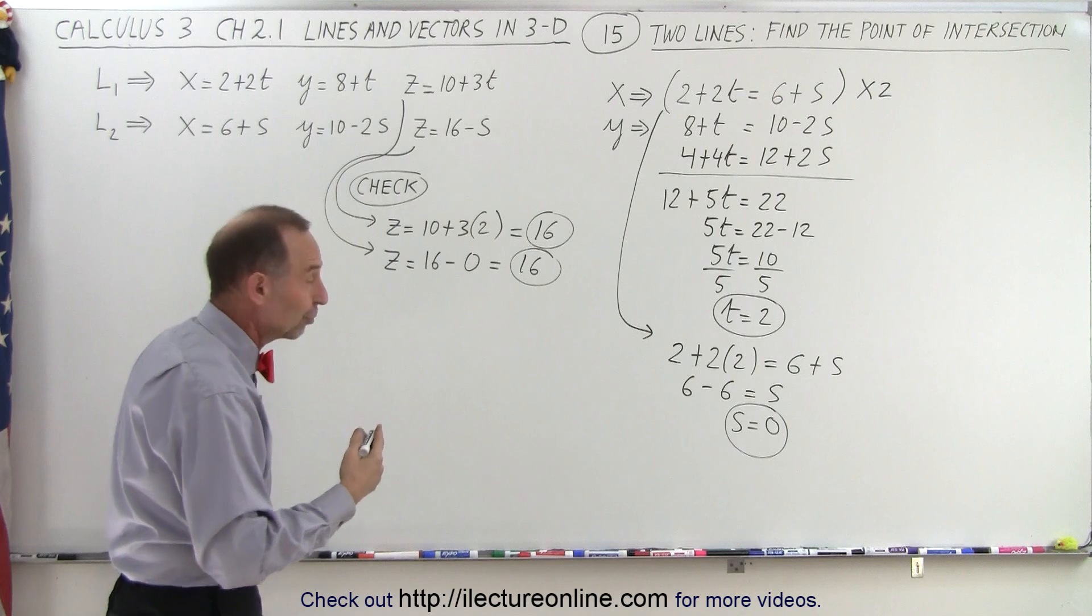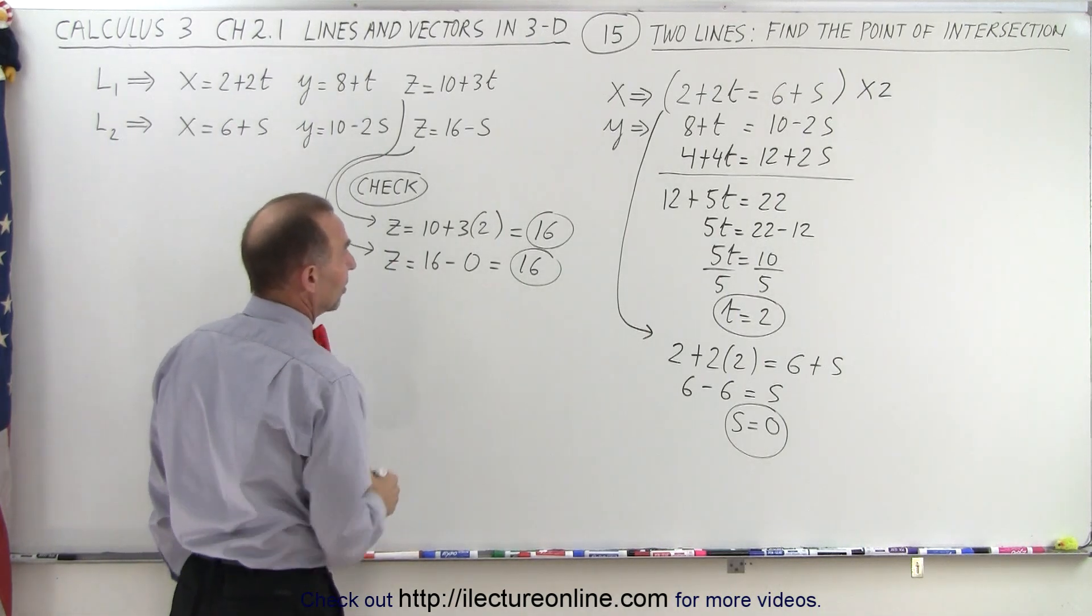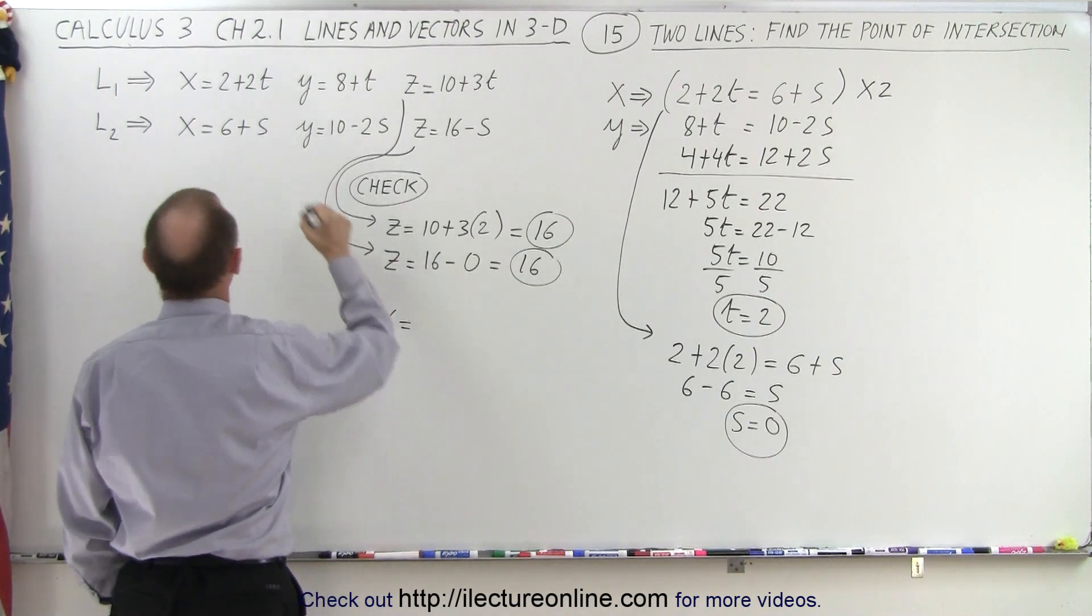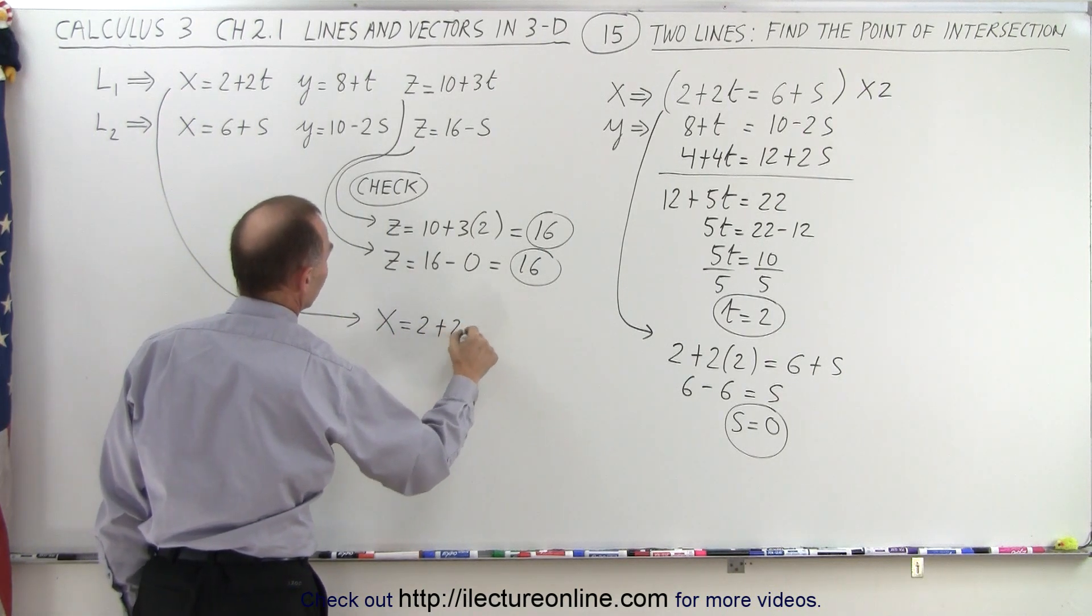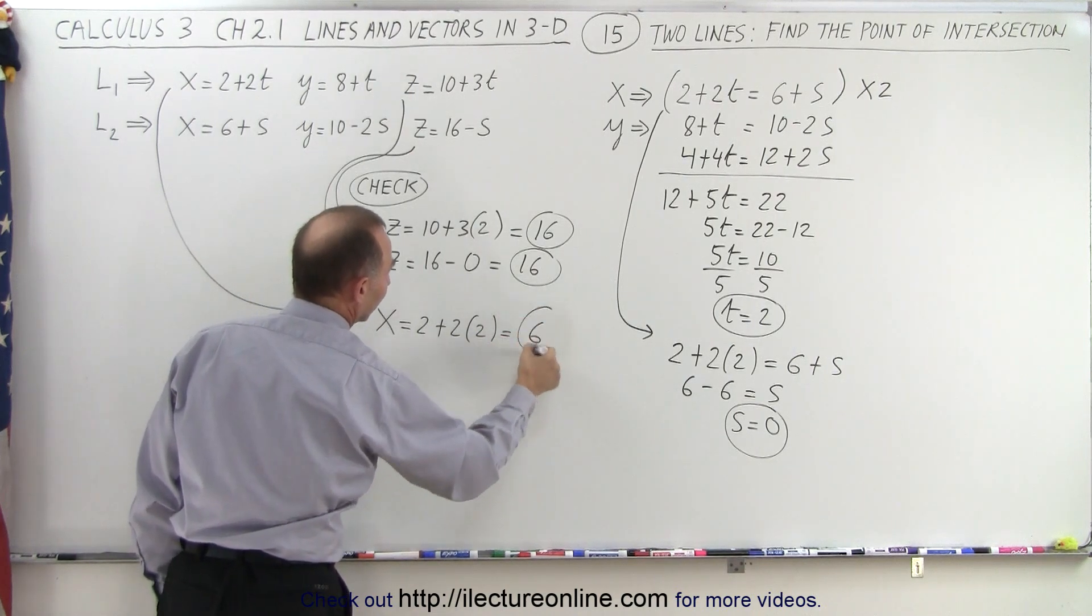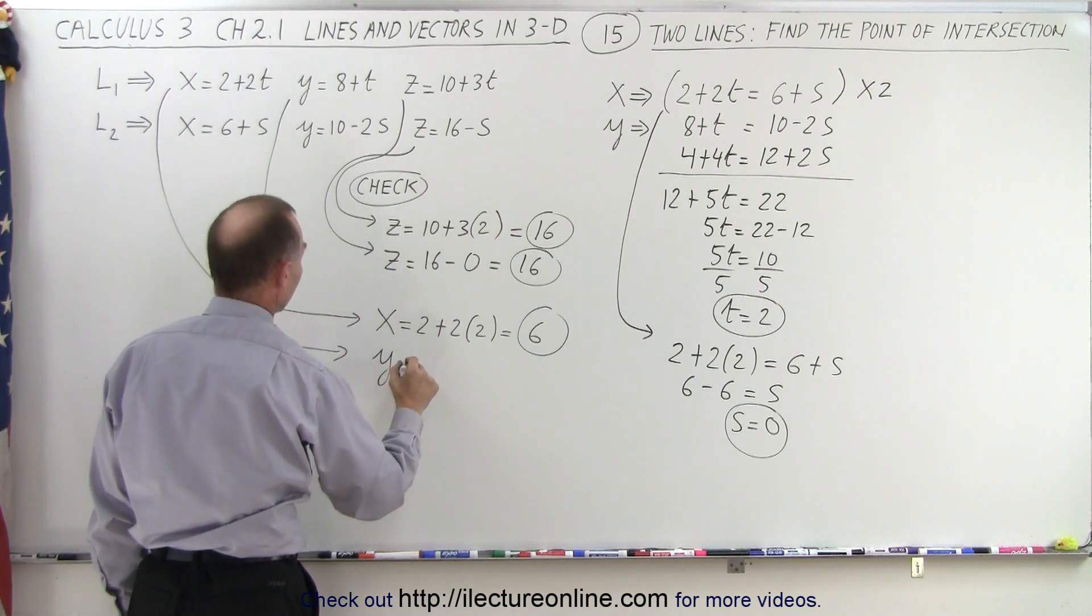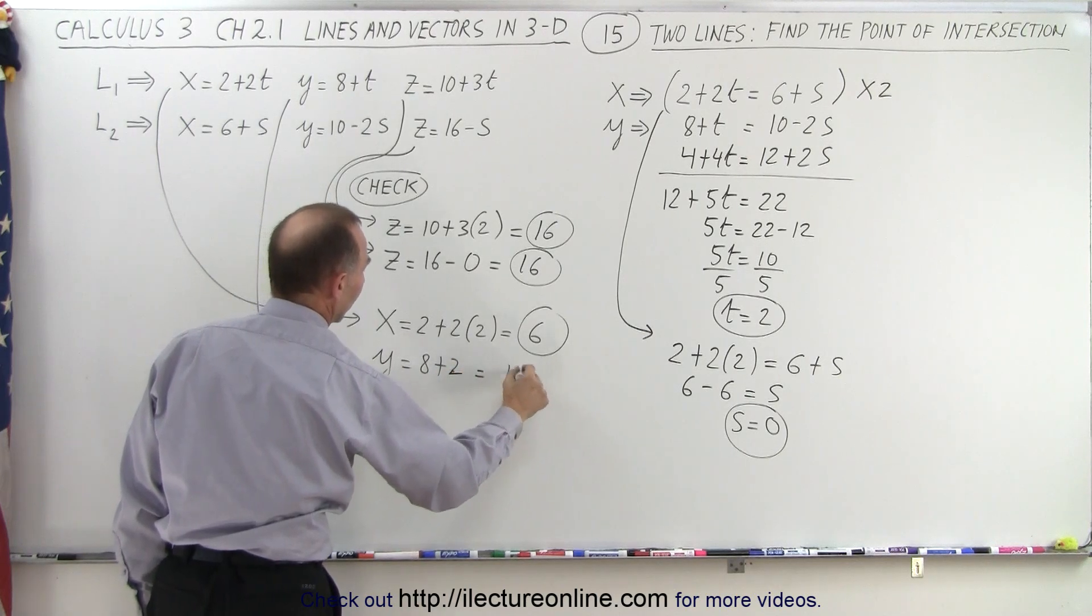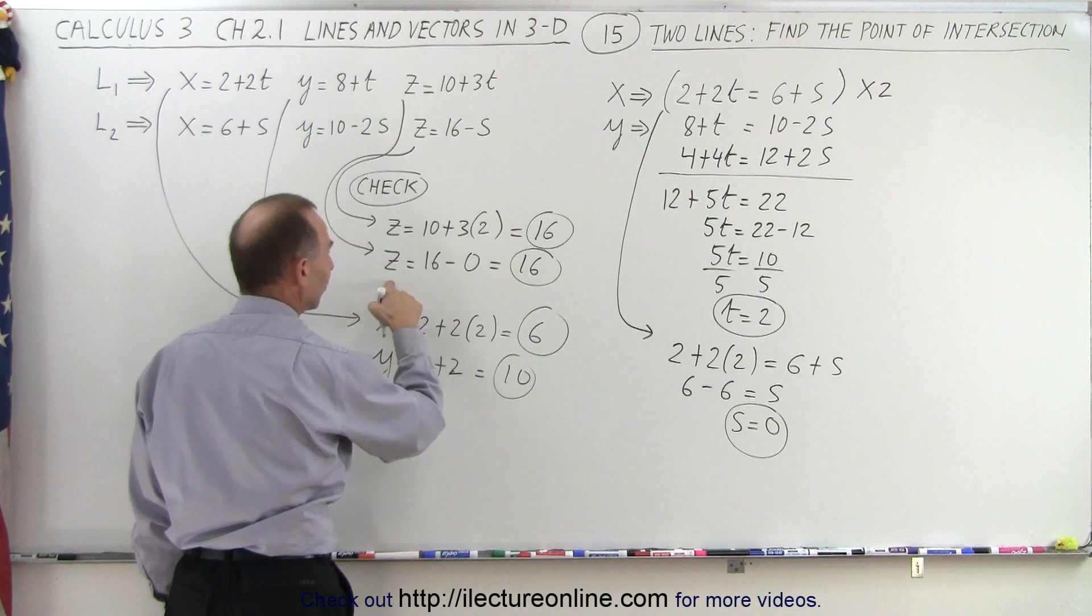Which means the lines do cross, and at that point, z will be equal to 16. And of course, we also need to find x and y. So x is equal to 2 plus 2 times t, which is 2, which is equal to 6, so the x value is equal to 6. And y, by taking this equation, we say y is equal to 8 plus 2, because t is equal to 2, that's equal to 10. So when x equals 6, y equals 10, and z equals 16.